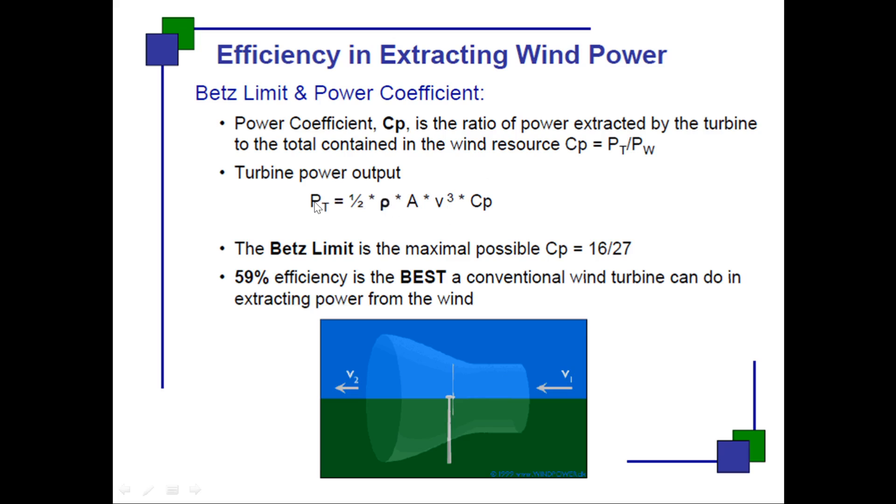Cp is Pt by Pw. Half rho Av cubed is the Pw, and Pt is the converted power or the energy available at the turbine. Half rho Av cubed is the energy available in the wind. Betz's limit - the maximum possible is 16 by 27 or 59 percent efficiency is the best a conventional wind turbine can do in extracting power from the wind. This is the movement when the wind is flowing from velocity v1 to v2. This change in velocity from v1 to v2 will be converted to the movement of these blades and later to electricity.